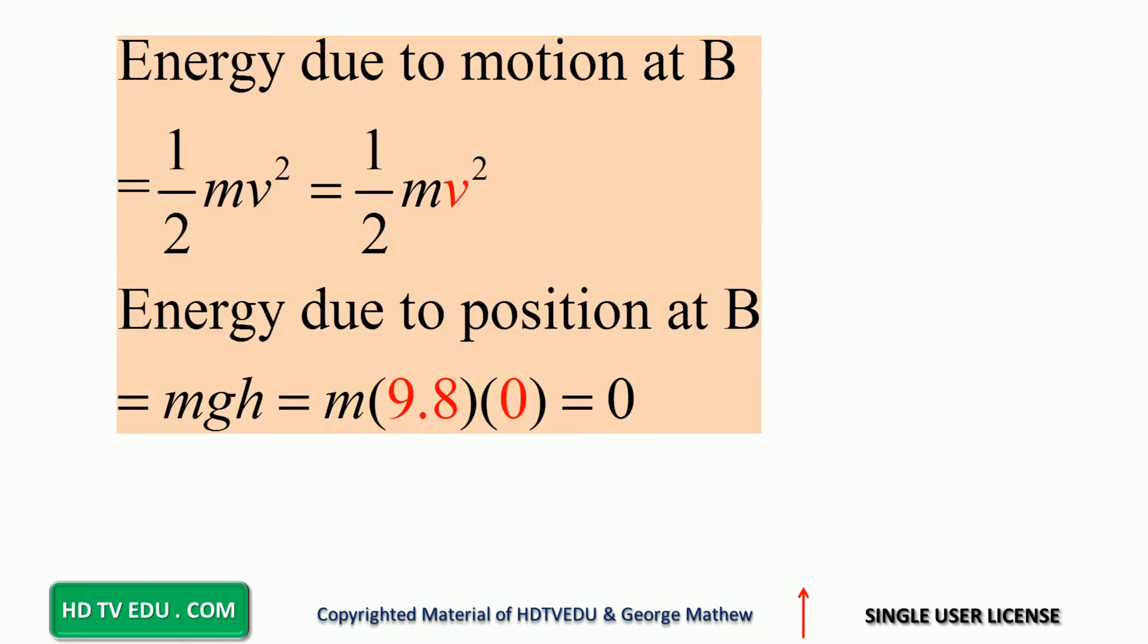Let us go to point B, and what do we see? Energy due to motion at B is one half mv squared. It is definitely moving at point B. Energy due to position at B is MGH, where H is the height from the zero level.